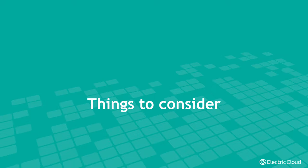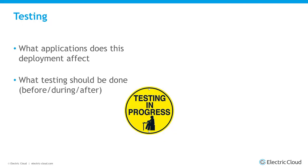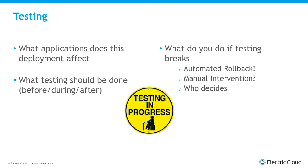Now I want to go into things you should consider when doing database deployments. First of all, testing: what applications deploy stuff, what should you do for testing, do you test before, during, or after the database upgrade, or all three? And what do you do if your testing breaks — do you automatically roll the database back? How do you do that — do you use manual intervention, and who decides what to do if it breaks?